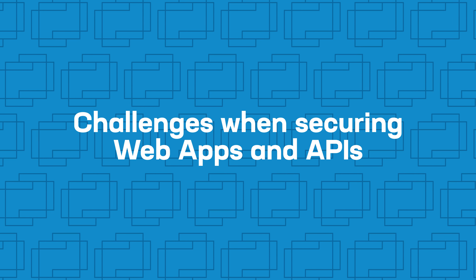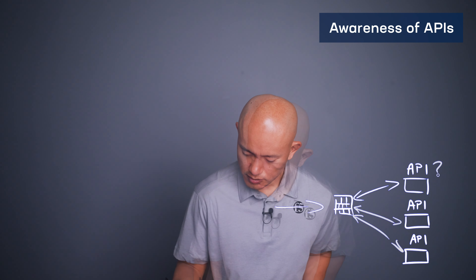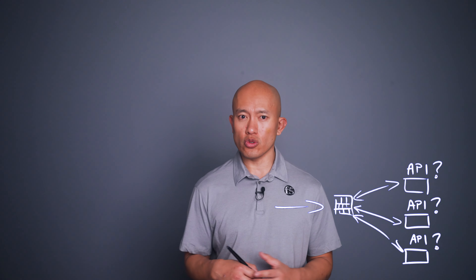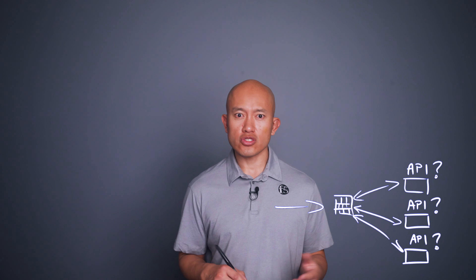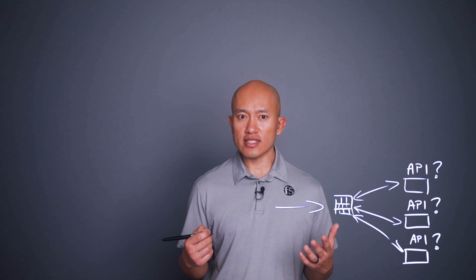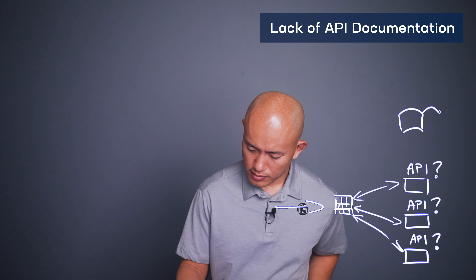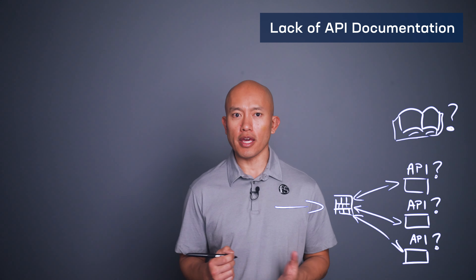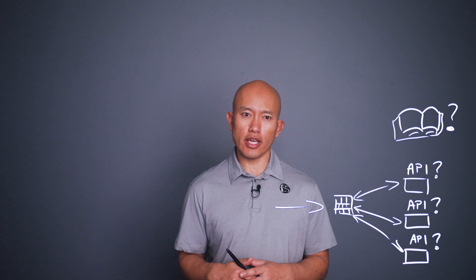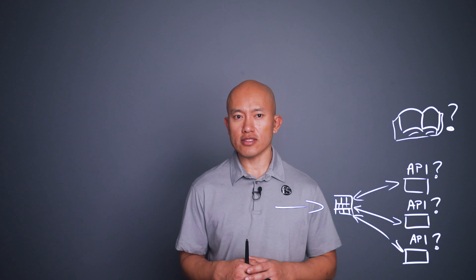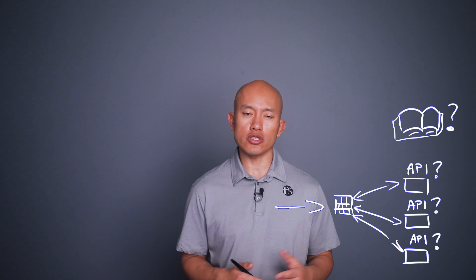Now let's talk about some of the challenges you encounter when securing your web apps and APIs. The first challenge is simply the awareness of APIs in your environment. The proliferation of APIs is exponential broadly on the internet, but especially in your own environment. So many apps and devices just come with APIs enabled, and you can easily end up exposing a lot more access to APIs than you thought. There's also a varying degree of documentation provided around API endpoints — too often there are APIs that the original developers have even forgotten were created, let alone documented for the customer.